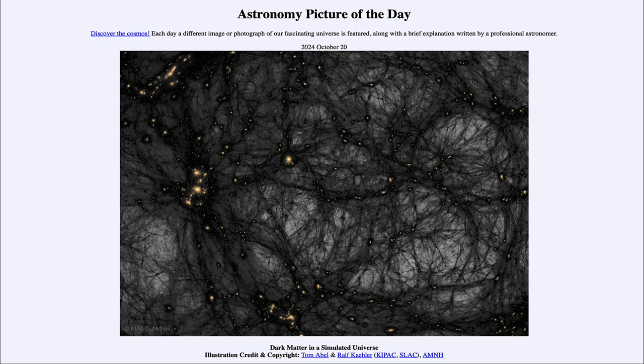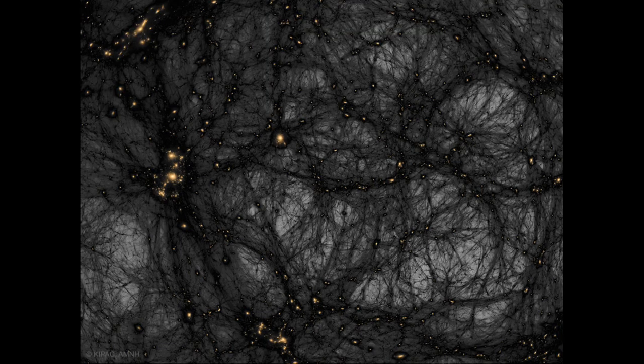So what do we see here? This simulation shows the structure of the universe composed mainly of two different types of matter. The orange represents ordinary matter - the stuff we see every day, the stuff that we and the stars and galaxies are made of.